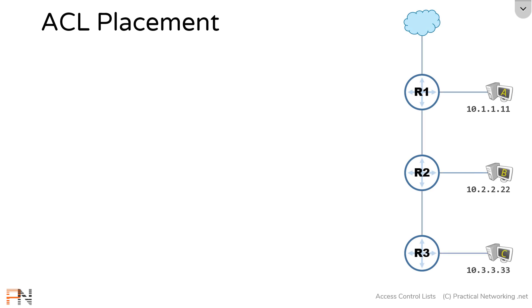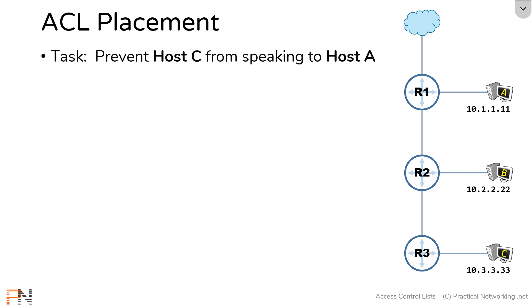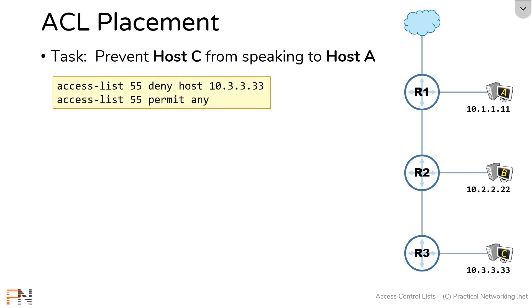To talk through it, we're going to use this topology. This topology has three routers and one host connected to each of the routers. We're going to try and accomplish the task of preventing host C from speaking to host A. We just learned how to configure access lists in the prior videos, so let's configure an access list that's going to prevent traffic from host C. You'll notice this is a standard access list — we'll talk about standard access lists first, and extended access lists later. This numbered standard access list is configured to deny traffic with a source IP address of 10.3.3.33 — that's host C's IP address. The next line permits all remaining traffic, because we only want to prevent host C from speaking to host A, and don't want to inadvertently prevent host C from speaking to host B or the internet.